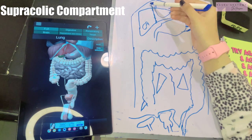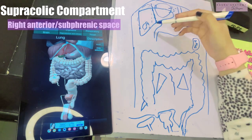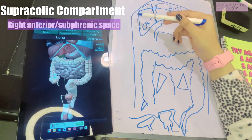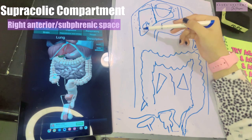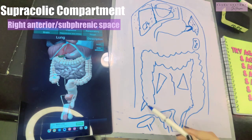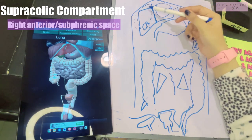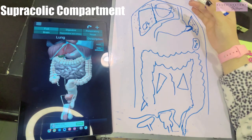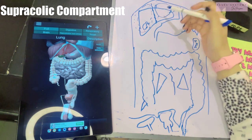The next space is the right subphrenic or right anterior space, which lies between the right lobe of the liver and the diaphragm, anterior to the liver. The clinical significance of this space is that infections from the gallbladder — lying on the right side — or infections coming up from the appendix on the right side can enter the right subphrenic space.